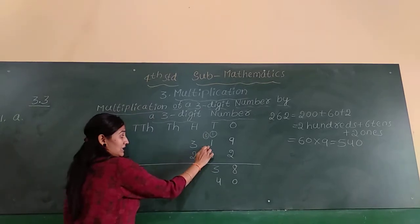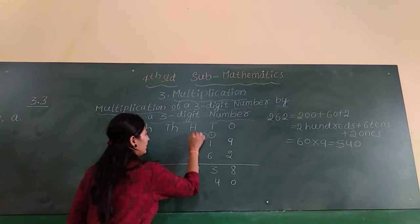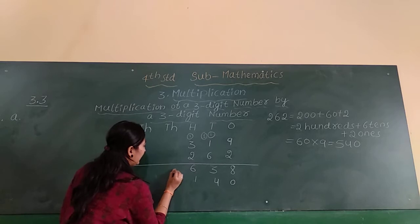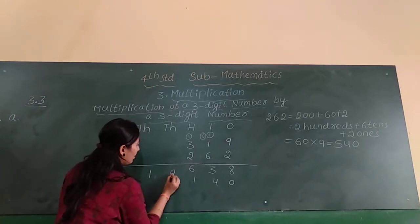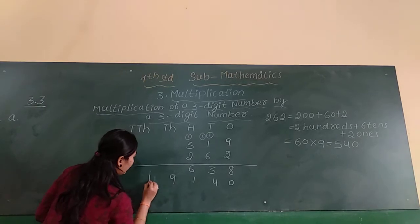Next 6 ones are 6, 6 plus 5 is 11. Write 9 and 1 carry over here. Next 6 threes are 18, 18 plus 1 is 19. So write 9 and 1 here.